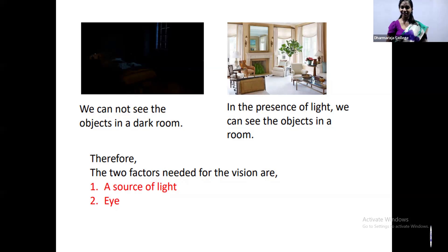Now we are going to see what things are required to see something. When we look at something, what are the basic things needed? For that we are going to do a simple activity. First, keep your hands here and try to observe the lines in your palms. You will see that there are patterns of lines — observe them very carefully.